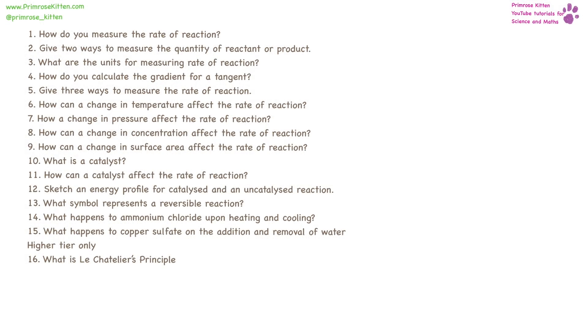There are a number of ways you can measure a rate of reaction. You can measure it by loss of reactants or by the creation of products. For example, that could be by mass, gas produced, color change, pH.